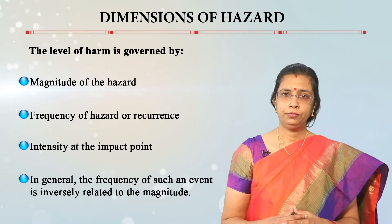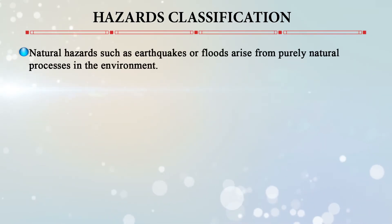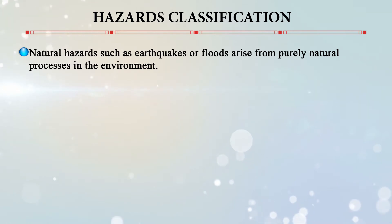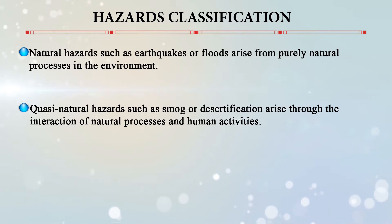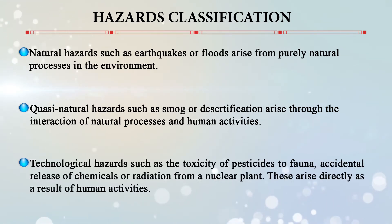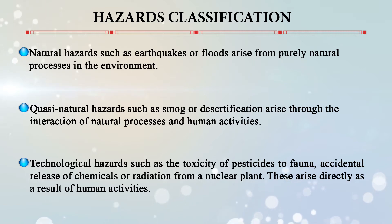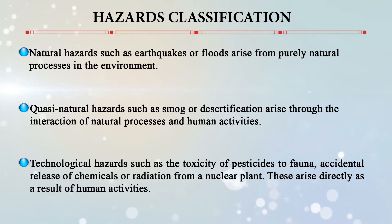We can classify natural hazards as purely natural — such as earthquakes or floods — arising from natural processes. Quasi-natural hazards, such as smog or desertification, arise through the interaction of natural processes and human activities. Technological hazards are due to human activities, such as the toxicity of pesticides, accidental release of chemicals, or an explosion from a nuclear plant.